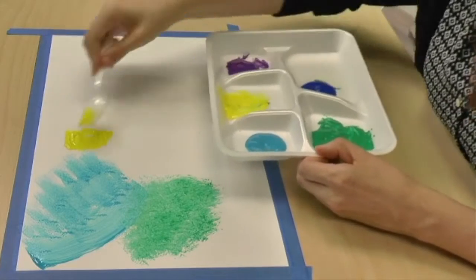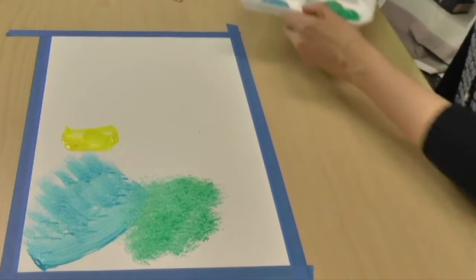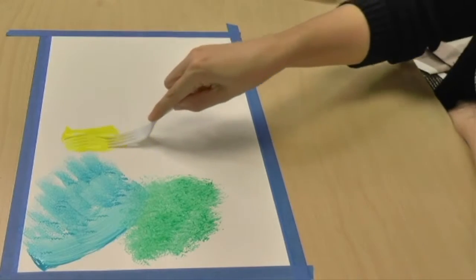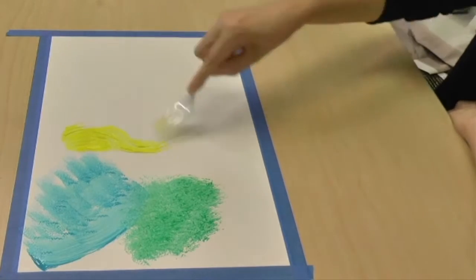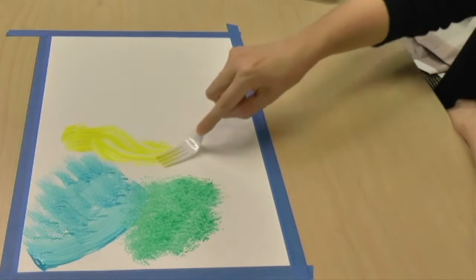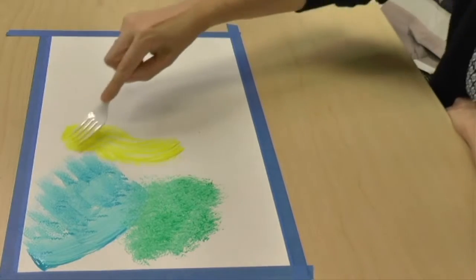So I'm going to use one fork for this and then I'm going to use the other fork to see what kind of patterns you can make. That's pretty cool. It kind of makes the paint almost like 3D.